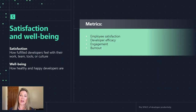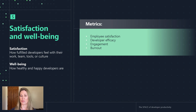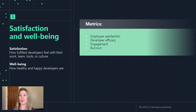The first dimension is satisfaction and wellbeing. This really captures how fulfilled and happy developers are in their roles. There's a bunch of research supporting the importance of this — satisfaction and productivity are highly correlated. It's crucial to look at how developers are feeling in order to get a holistic understanding of productivity. This is where surveys come in handy. We can ask how developers are feeling in their roles and if they have the resources and tools necessary to do their work. You just can't capture some of this in tooling and telemetry.